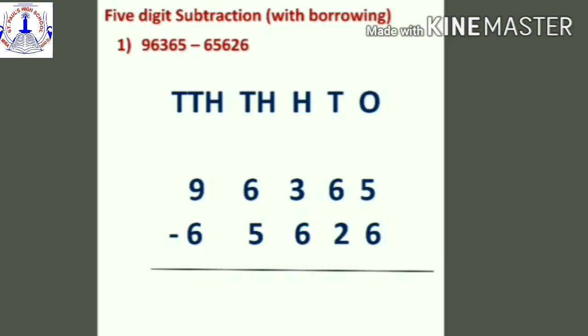Let's begin with the ones place: five minus six. You have to subtract six from five, but six is greater than five, so you cannot subtract. What are you going to do? You are going to borrow one number from its neighbor — the tens place. In the tens place you have the number six, so six will give one to the ones place.